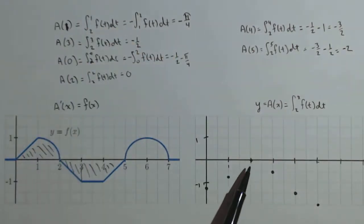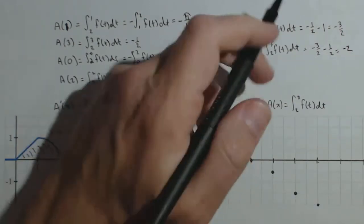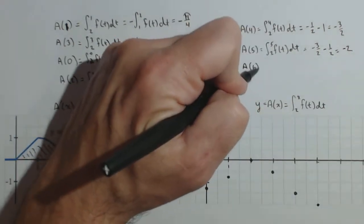Now notice, as we're sketching this, we have what looks to be a max here at 2. It makes sense because the derivative is 0 here, and it went from positive to negative. Here, derivative is 0, went from negative to positive, decreasing. We're probably going to have a min, and we're going to start going back up here when we calculate a(6).